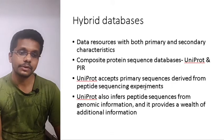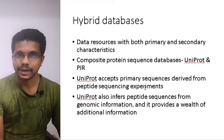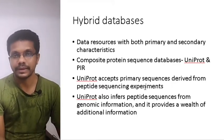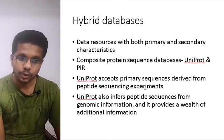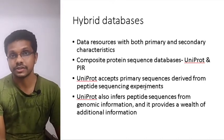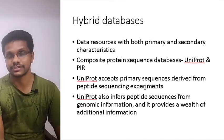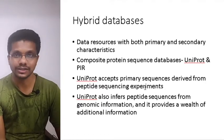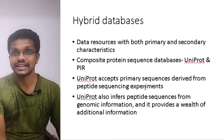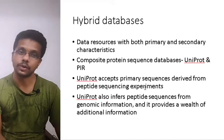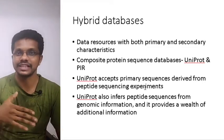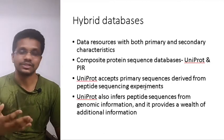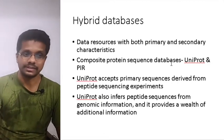Taking UniProt as an example: UniProt accepts primary sequences — you can submit primary protein information — and it also makes peptide sequences from genome sequences. If you submit a nucleotide sequence it will automatically generate the corresponding peptide sequence. So it functions as both a primary and a secondary database, which is why we call it a hybrid database.